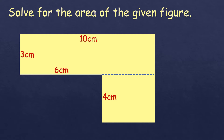The rectangle on top has a dimension of 3 cm by 10 cm — the length and the width. At the bottom, it looks like a square, but it depends on the length. If it's 4, then it's a square; if not, it's still a regular shape — a rectangle. We need to cut it into regular shapes so that it's possible to solve for the area.